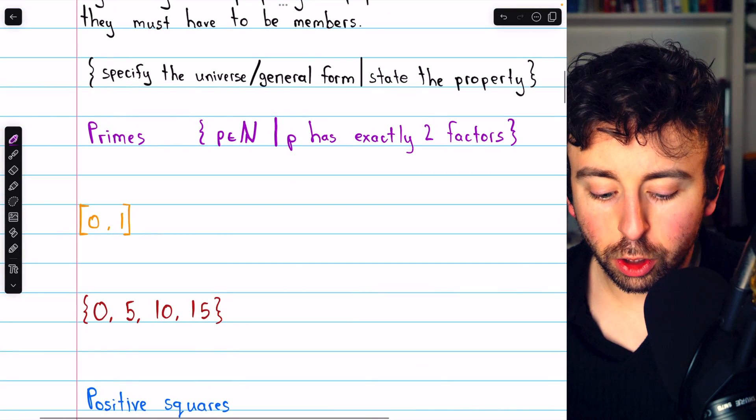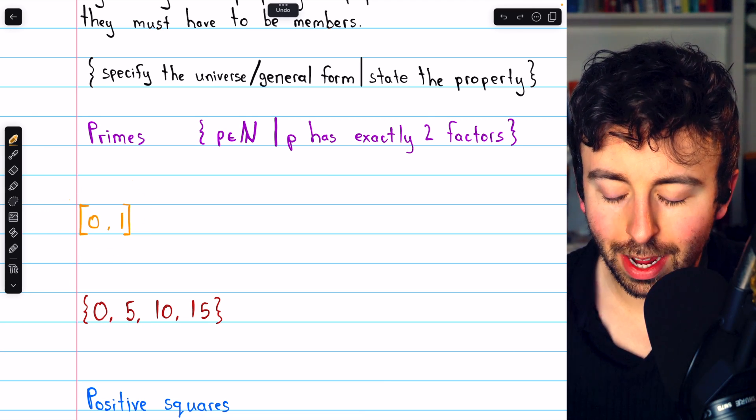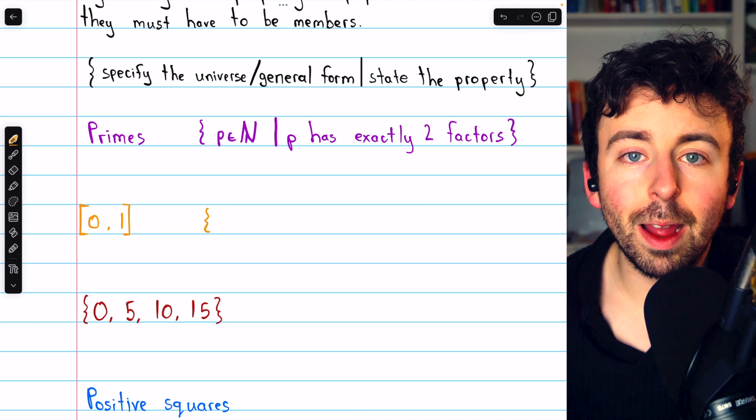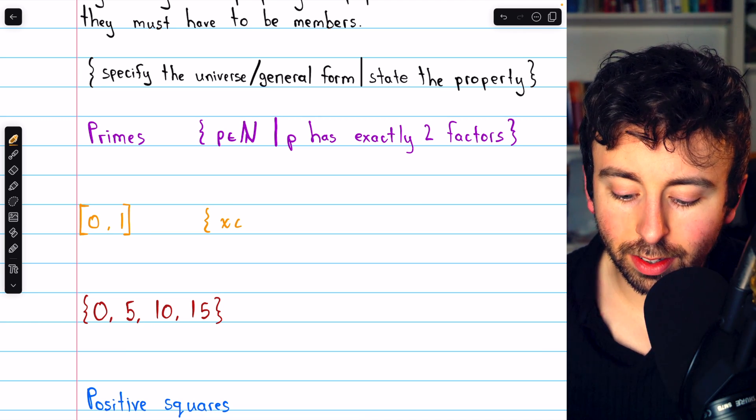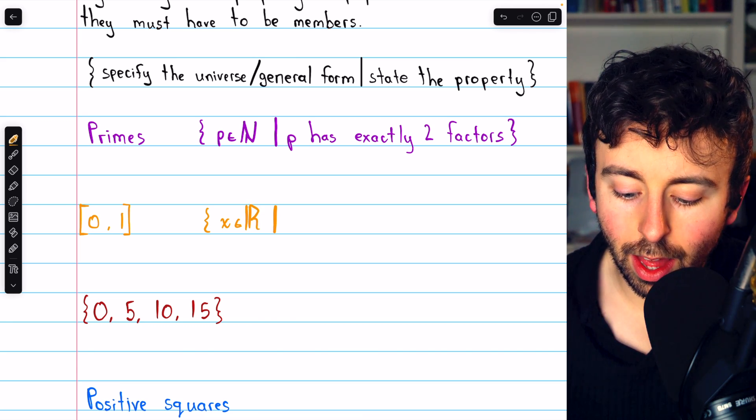Next, how would we write the closed interval from 0 to 1 using set builder notation? Well, let's start with our set brackets, and then we'll describe the universe the elements of this set come from. In this case, I would just say x has to be a real number. And then I'll use a vertical line.